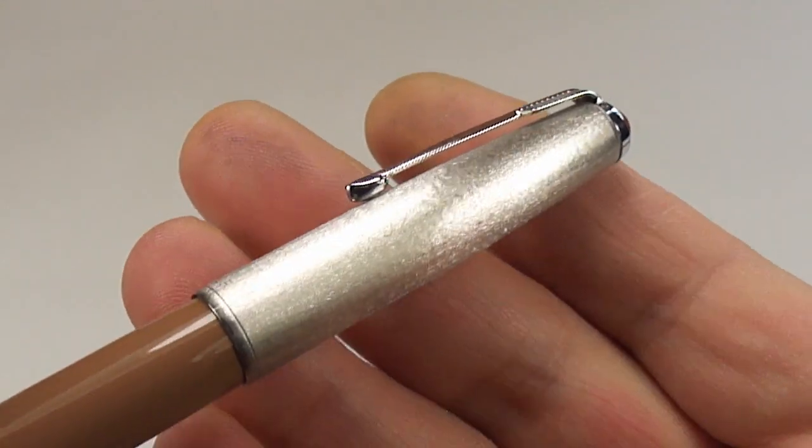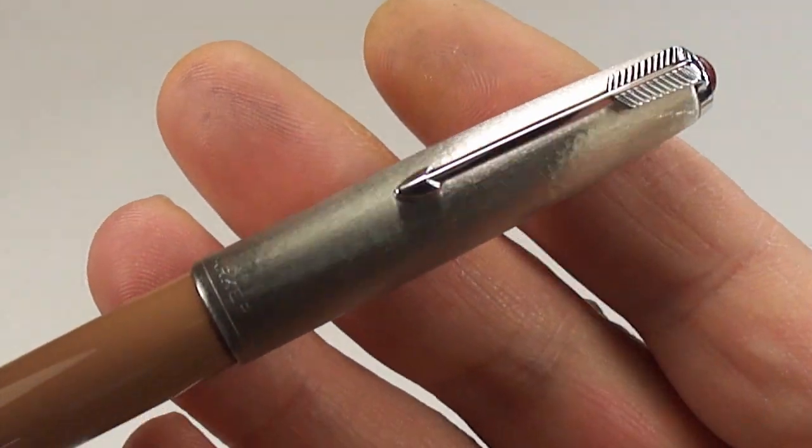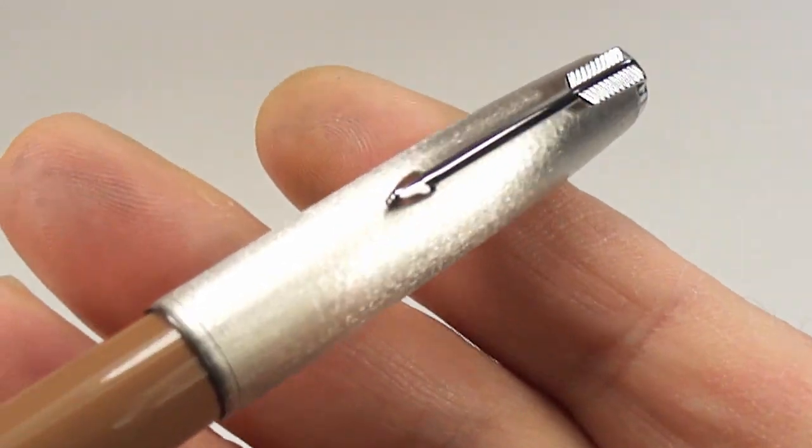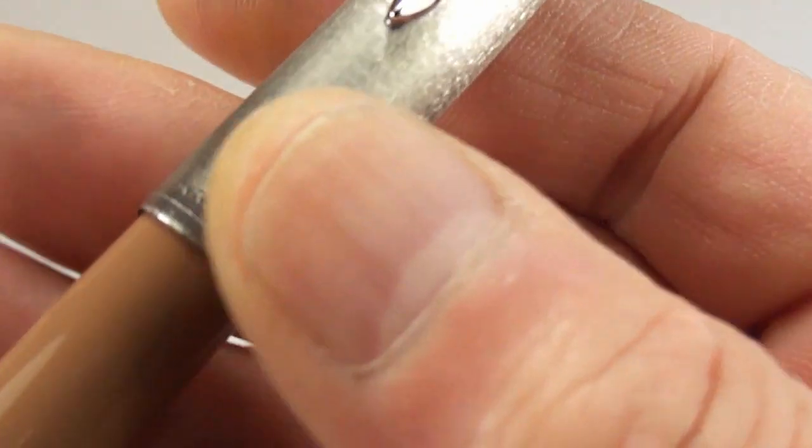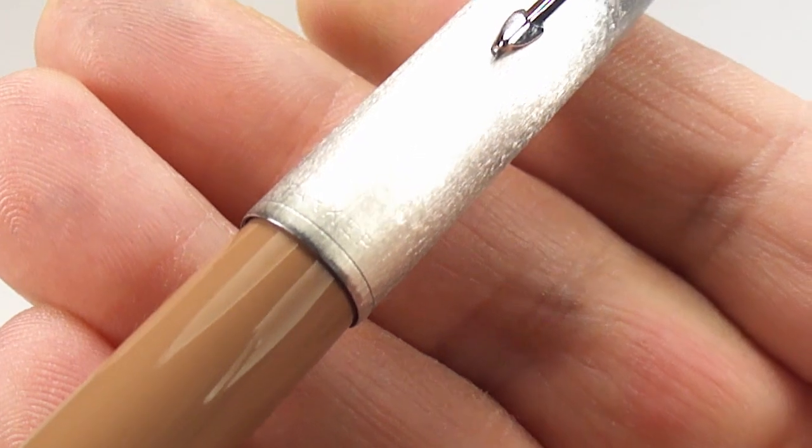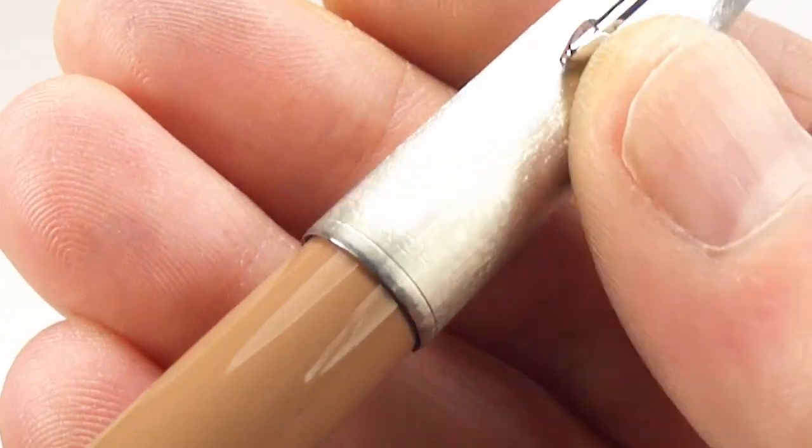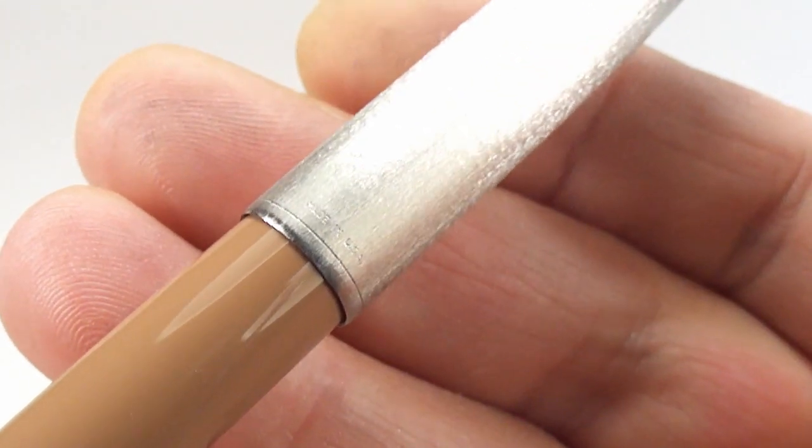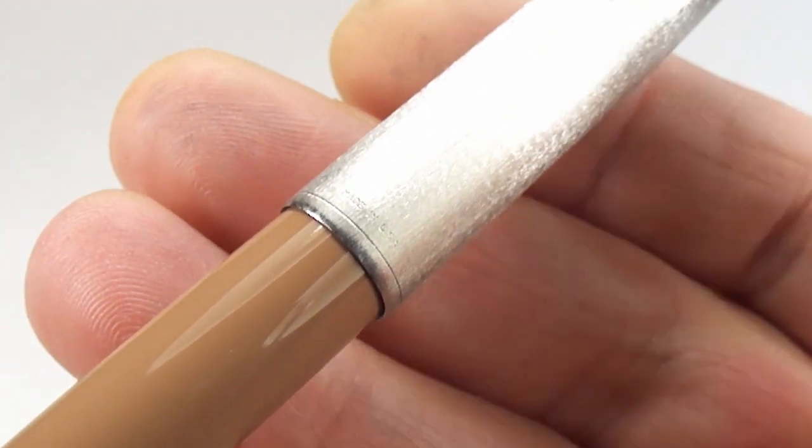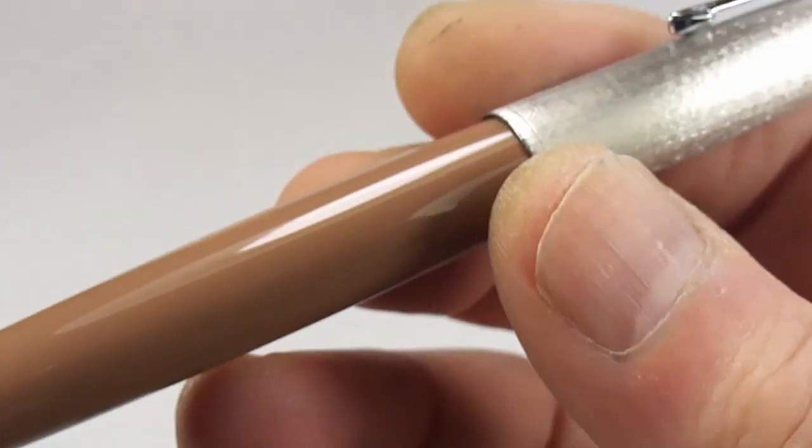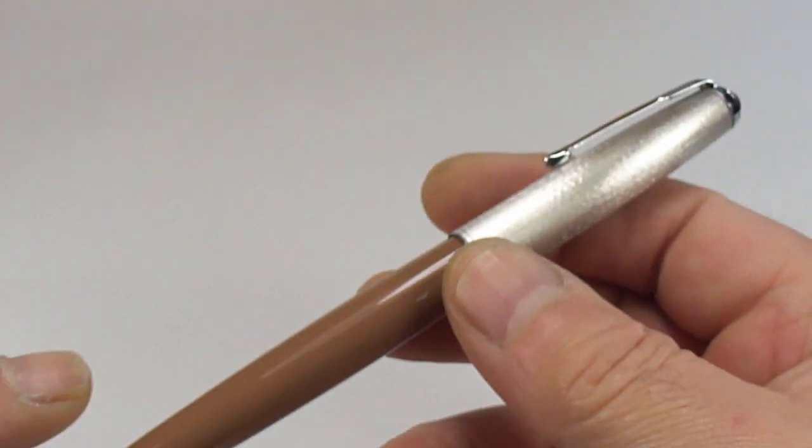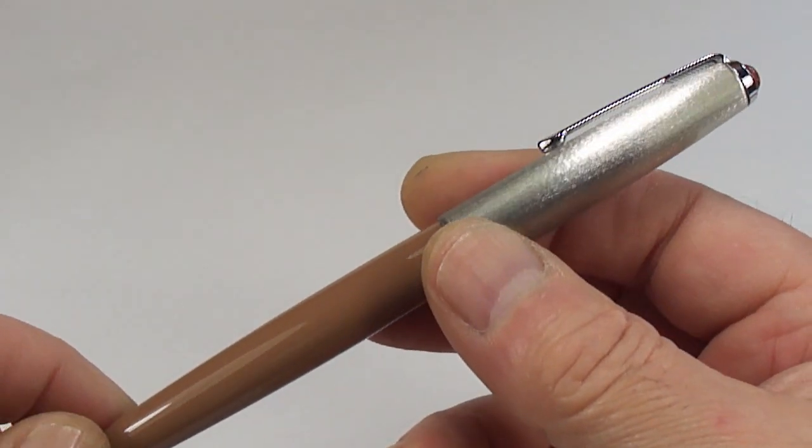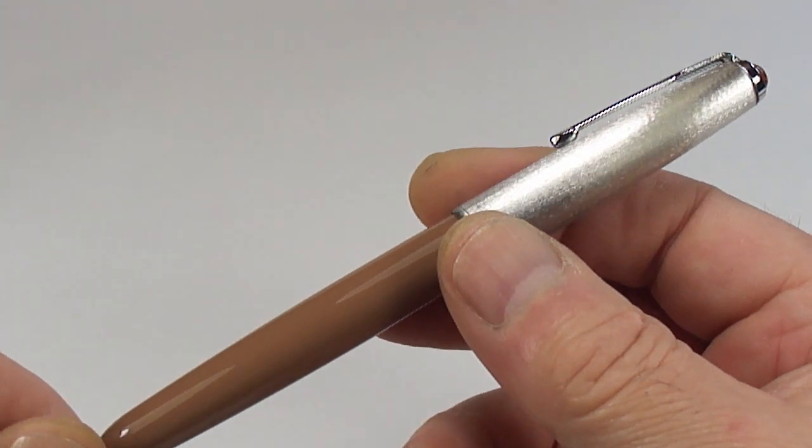To the very bottom of the cap, let's keep it nice and still, you'll be able to still see it's got the word Parker and then if I turn it round slightly you'll see it has made in USA. So this pen is made in the USA, it's actually made in 1953. I'll tell you why in a moment.